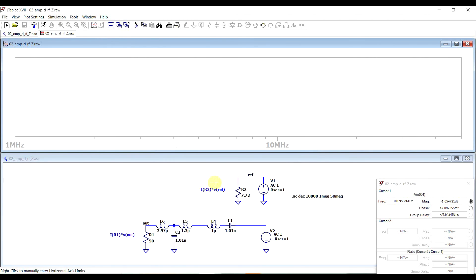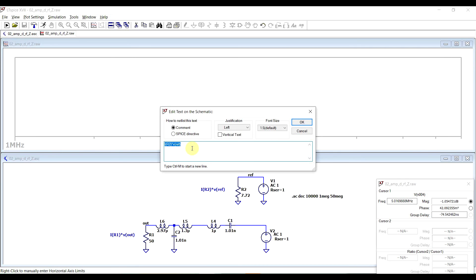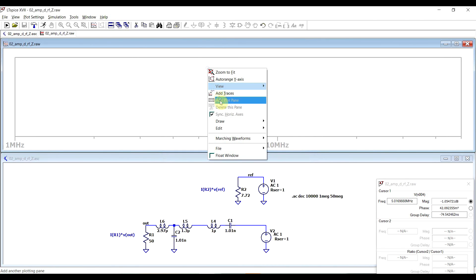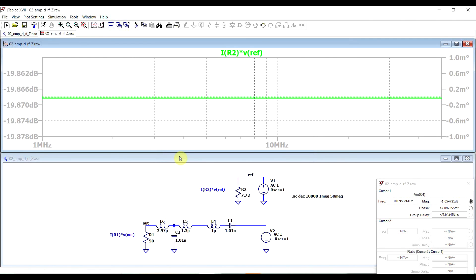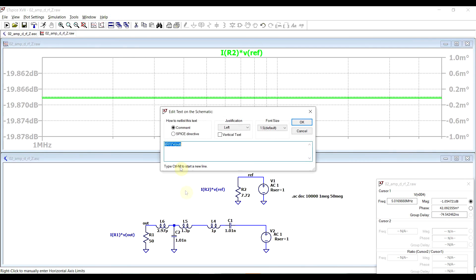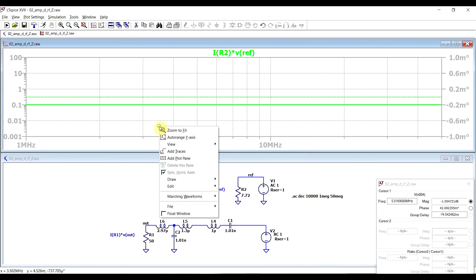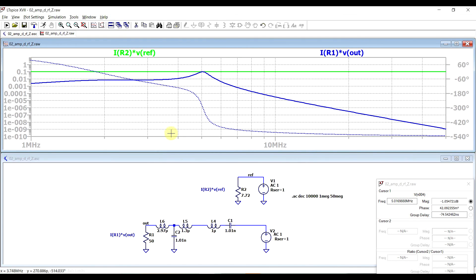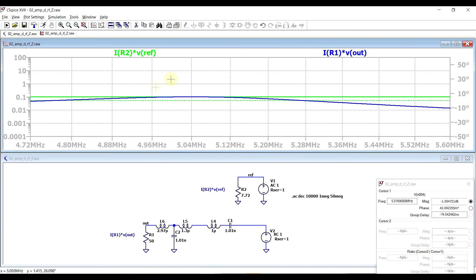Next we can also check our power delivery. So first of all, plotting out the power that gets delivered to our reference circuit, and then comparing this to the power that is getting delivered to our calculated circuit. So the two loads, the 50 ohm load and the 7.72 ohm load, do end up getting the same power delivery, again at 5.0 something megahertz. So the circuit is working as expected in a narrow frequency range.